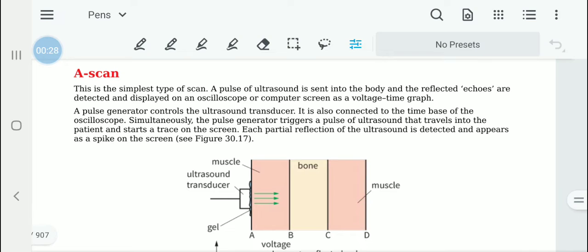A scan is the simplest type of scan where a pulse of ultrasound is sent into the body and the reflected echoes are detected and displayed on an oscilloscope as a voltage time graph. It will be seen as spikes.